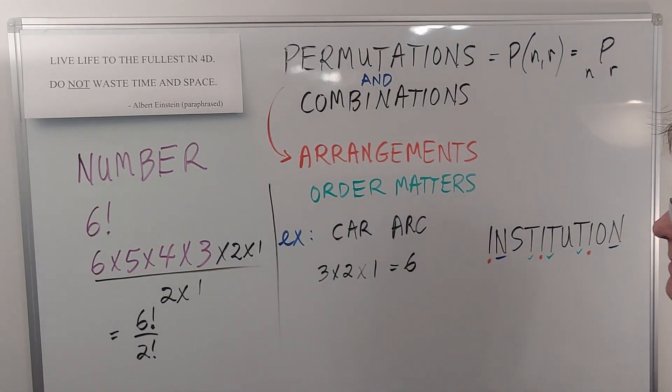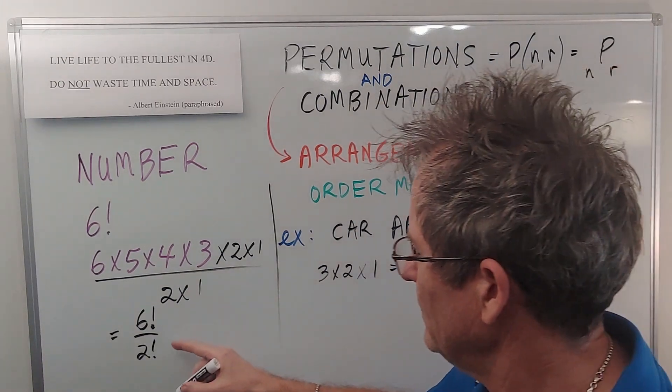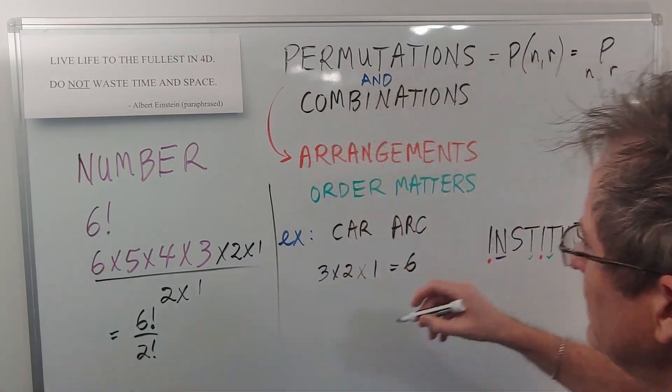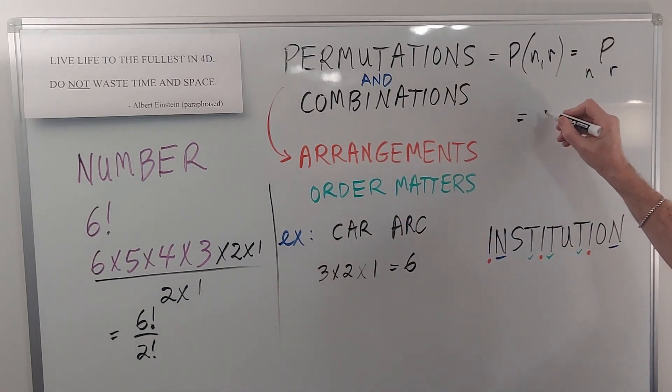Those are probably the two most common ones you're going to see. So if you have this number of letters in the word and you choose this number, it's going to turn out to be that. So I can write it like this: n factorial over n minus r factorial. That's the general formula.